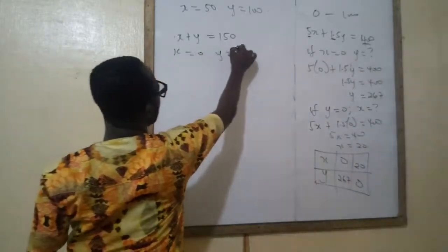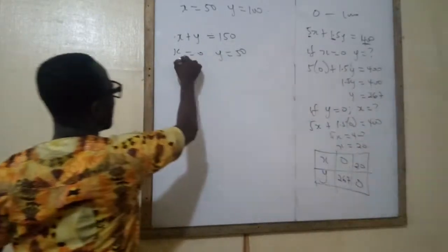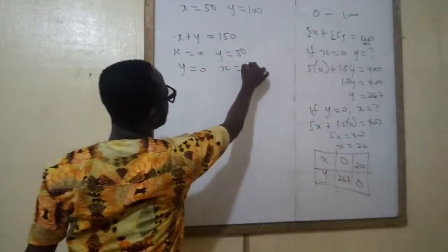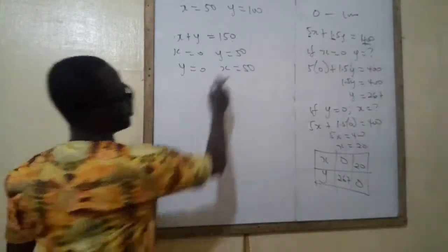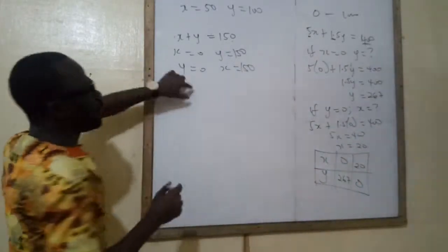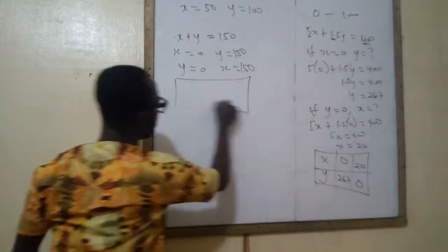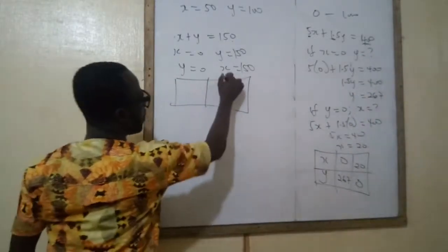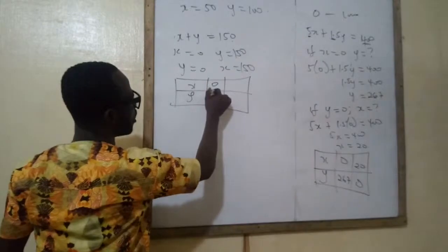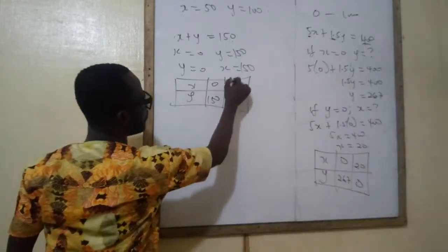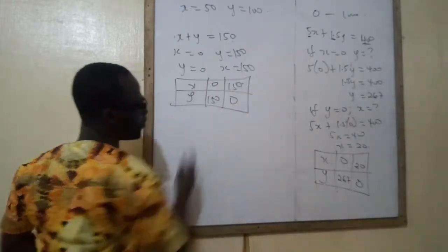Now here, when x is 0, y will be what? 50. And when y is 0, x will be what? Sorry, 150, 150. We don't think about that here. So let's prepare our table: x, y. When x is 0, y is 150. When y is 0, x is 150.